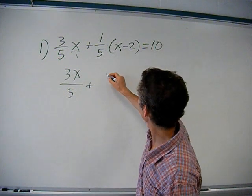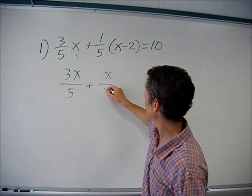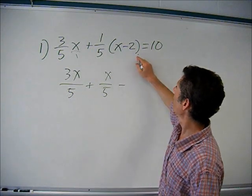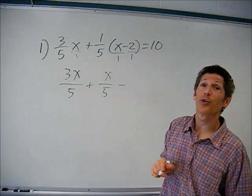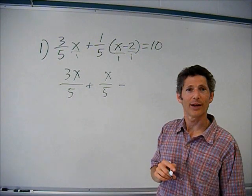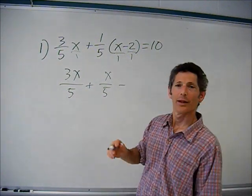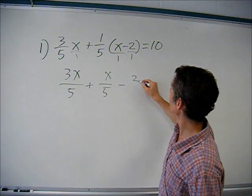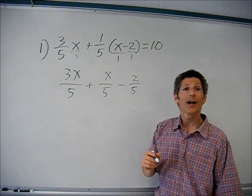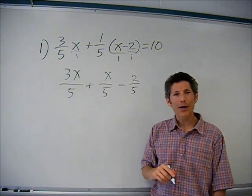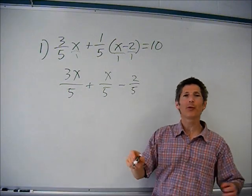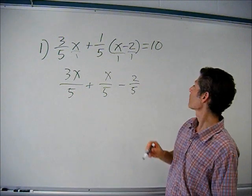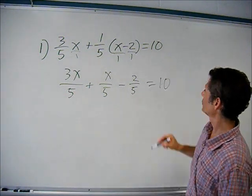I'm going to distribute one-fifth over these two terms here, so that's one-fifth x, or x over five. If you want to think of it as a fraction, it's over one, so you're multiplying top times top and bottom times bottom. I also have one-fifth times two, which is two-fifths — multiplying numerators, multiply denominators. Tops get multiplied, bottoms get multiplied.